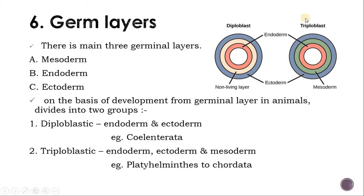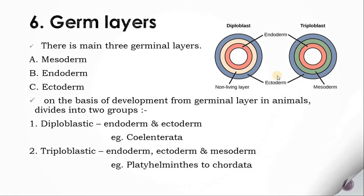The second type is the triploblastic animal. The outermost layer, ectoderm, is found. The innermost layer, endoderm, is found. And between ectoderm and endoderm, mesoderm is found. The animal originates from these three layers — ectoderm, endoderm, and mesoderm — so it is called a triploblastic animal.